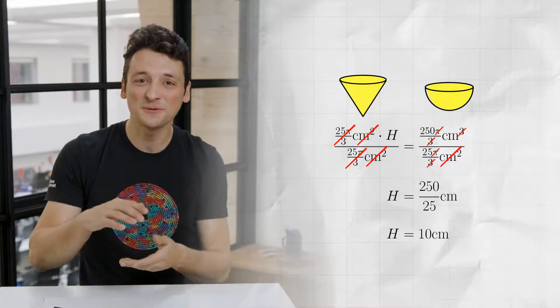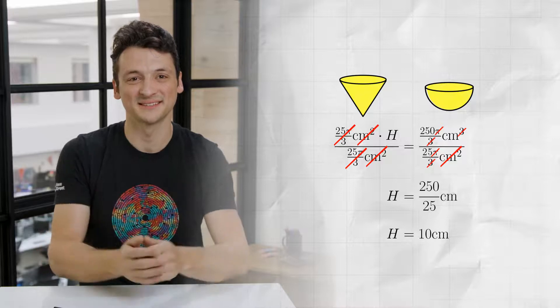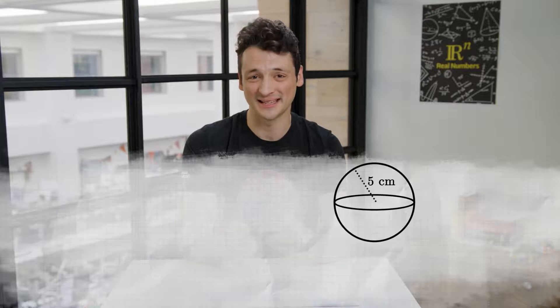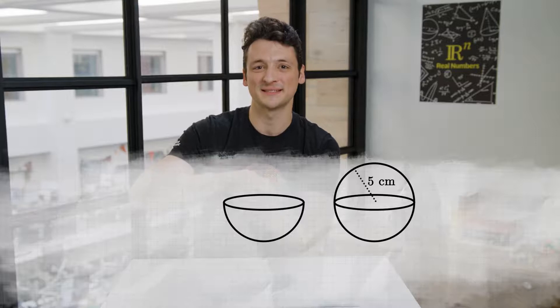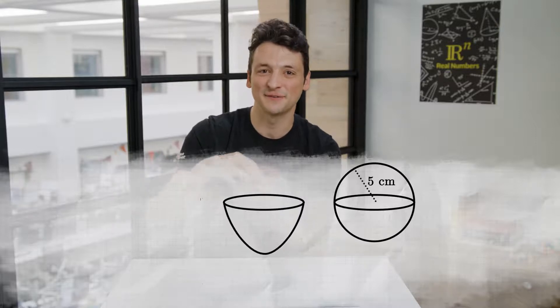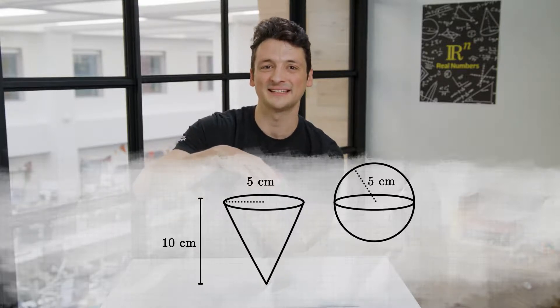That is, the cone should have the same height as the diameter of the sphere. Nice! Now that we are armed with the exact specifications of our idealized snow cone holder, we're ready to present this episode's problem of the week. To use this snow cone holder, we will reshape the bottom half of the 5cm radius sphere of slush into an inverted cone of radius 5cm and height 10cm.